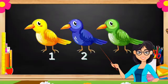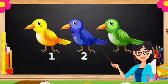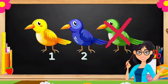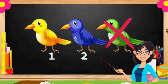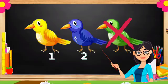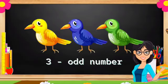So you see, there is only one group of two. What about the other one? So you see, one bird doesn't have a partner. So number three cannot be grouped into two. So number three is an odd number.